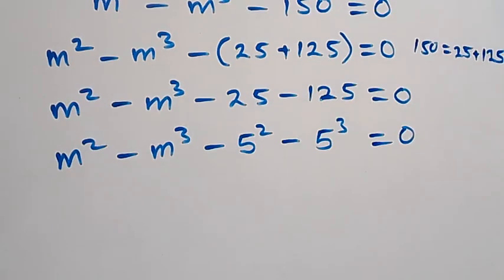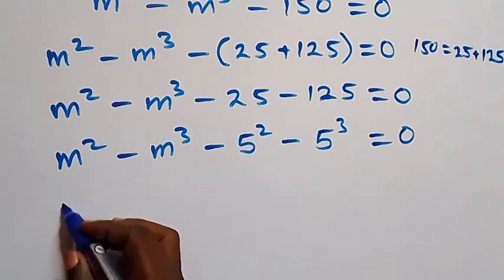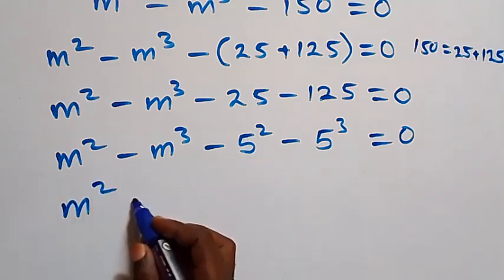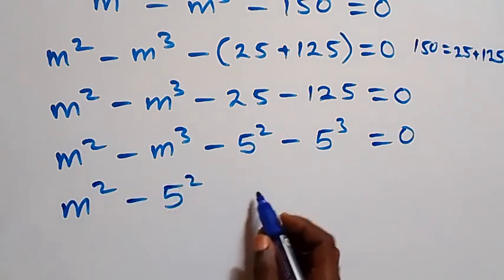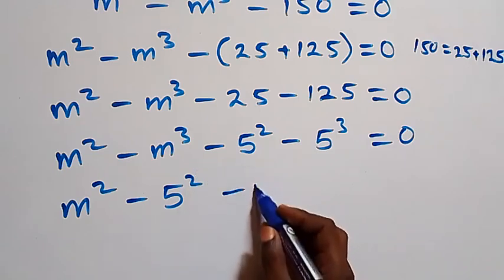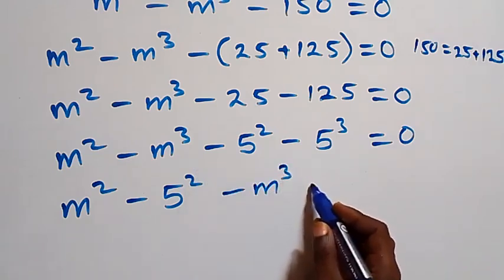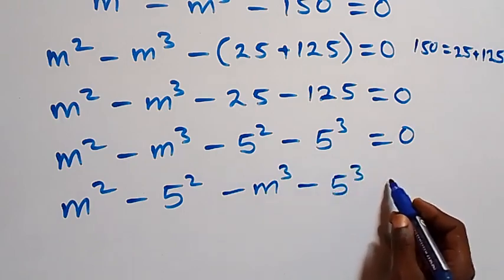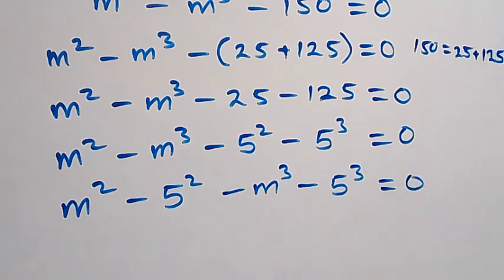Bringing the powers of two together, we have m squared minus five squared, then minus m cubed minus five cubed, equals zero.